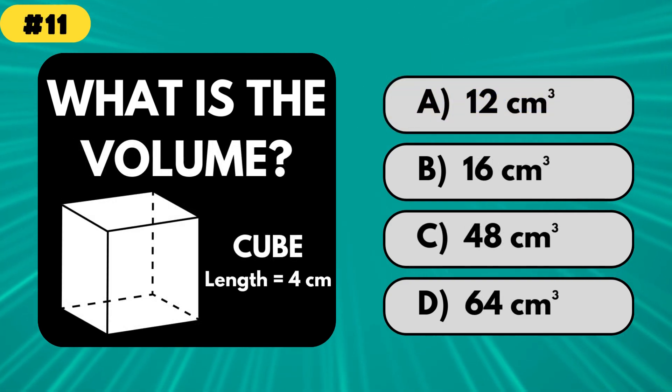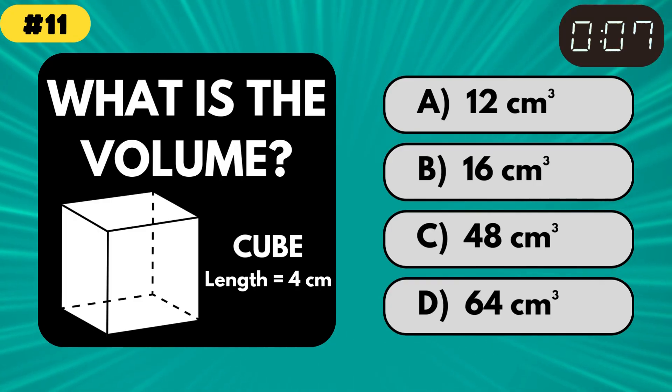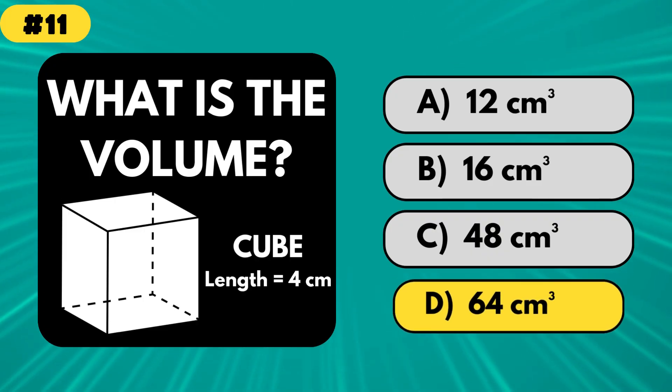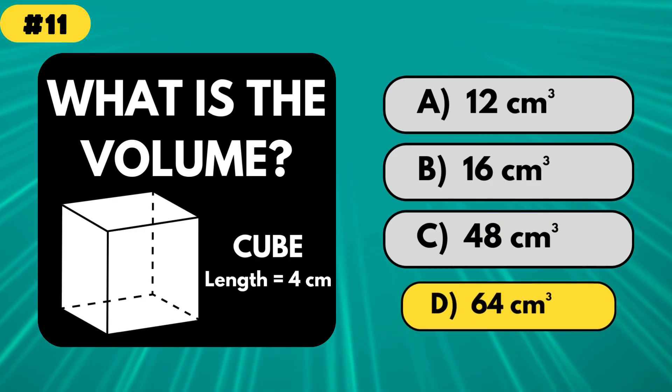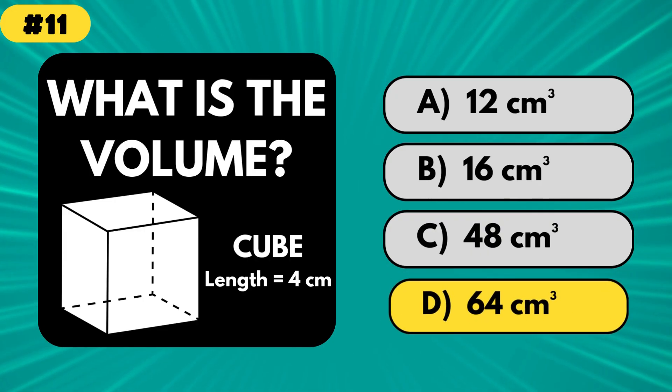What is the volume of a cube with sides that equal 4 centimeters in length? The answer is 64 centimeters cubed. To find the volume, you would have had to multiply 4 times 4 times 4.